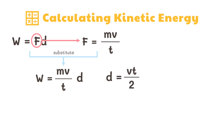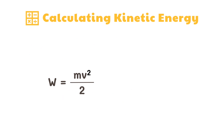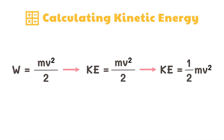Displacement is equal to velocity multiplied by time, all divided by 2. Substituting displacement into the formula, we get: work equals mass times velocity divided by time, multiplied by velocity times time divided by 2. This simplifies to: work equals mass times velocity squared divided by 2. This shows that the work done in accelerating an object equals the kinetic energy gained by the object. So the formula for kinetic energy is: KE equals mass times velocity squared divided by 2.